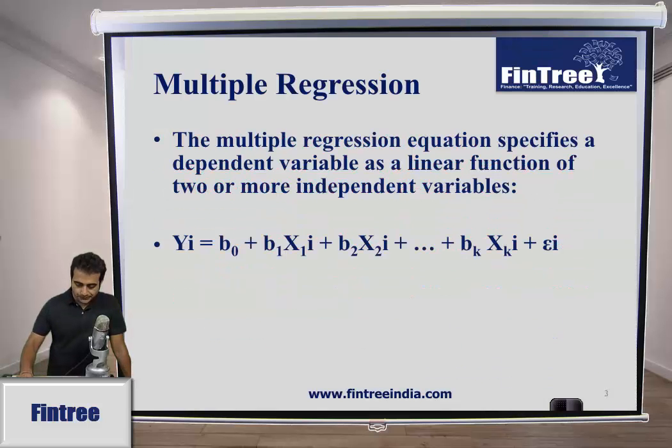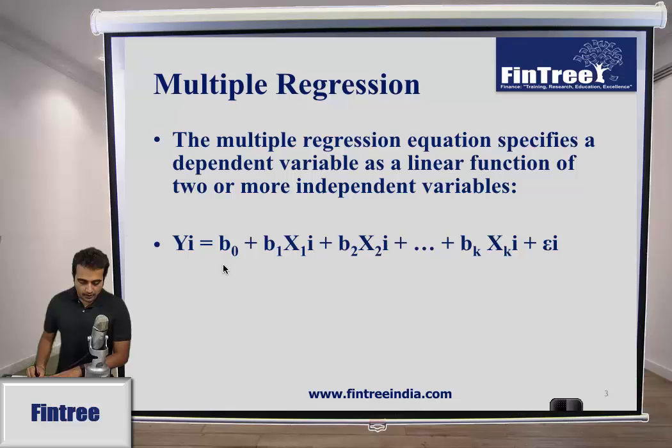Let us look at a few examples. This is a sample regression equation that we have. We have B0 which is your intercept, first slope independent variable, second beta coefficient, second independent variable, so on and so forth, and then we also have an error term.